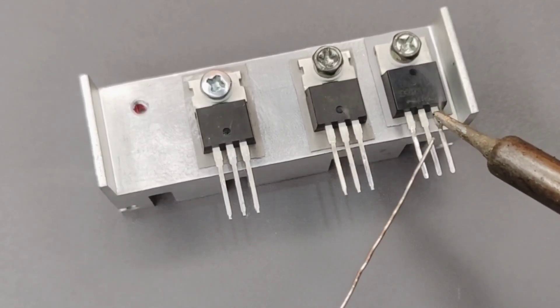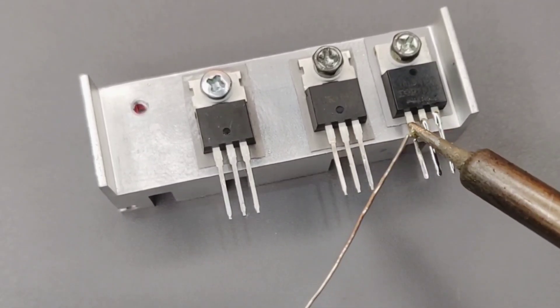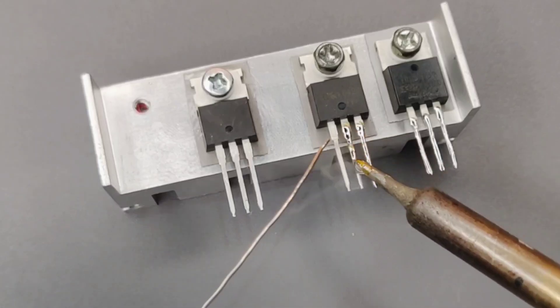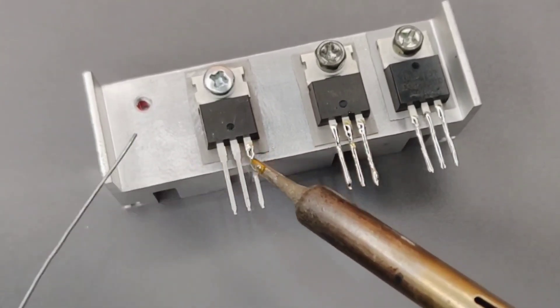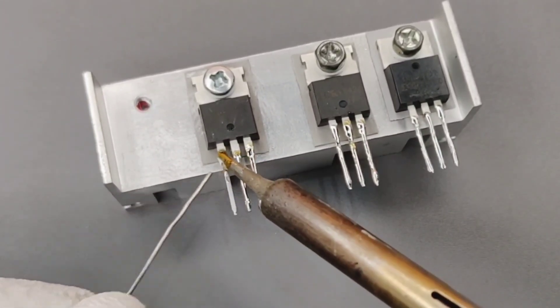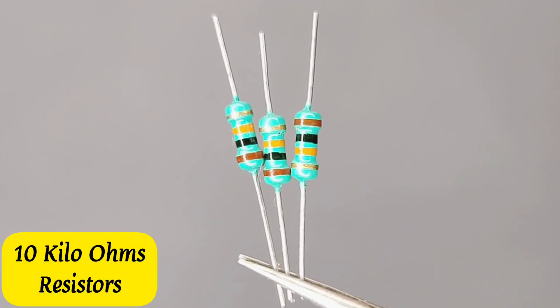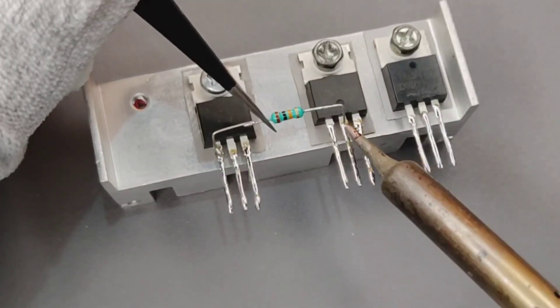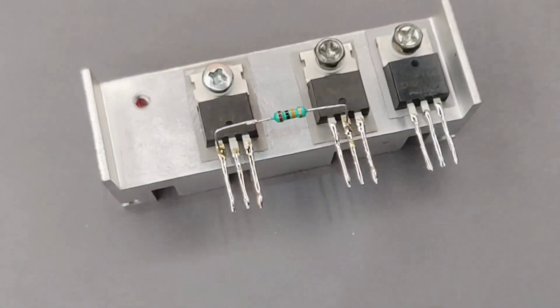First, pre-solder all the pins of MOSFETs like this. Take 3 pieces of 10k ohm resistors and solder between all the 3 MOSFET pins like this.